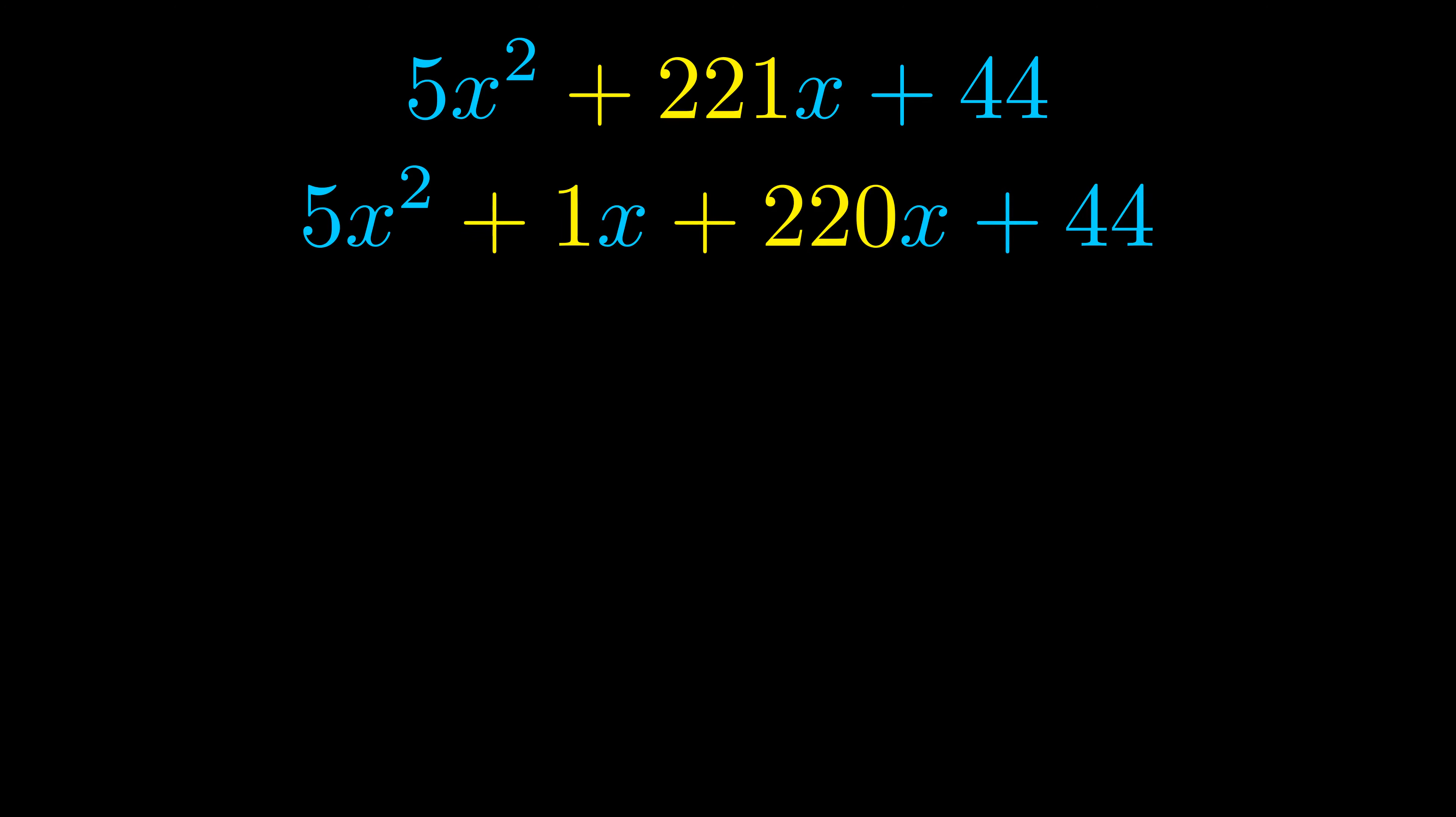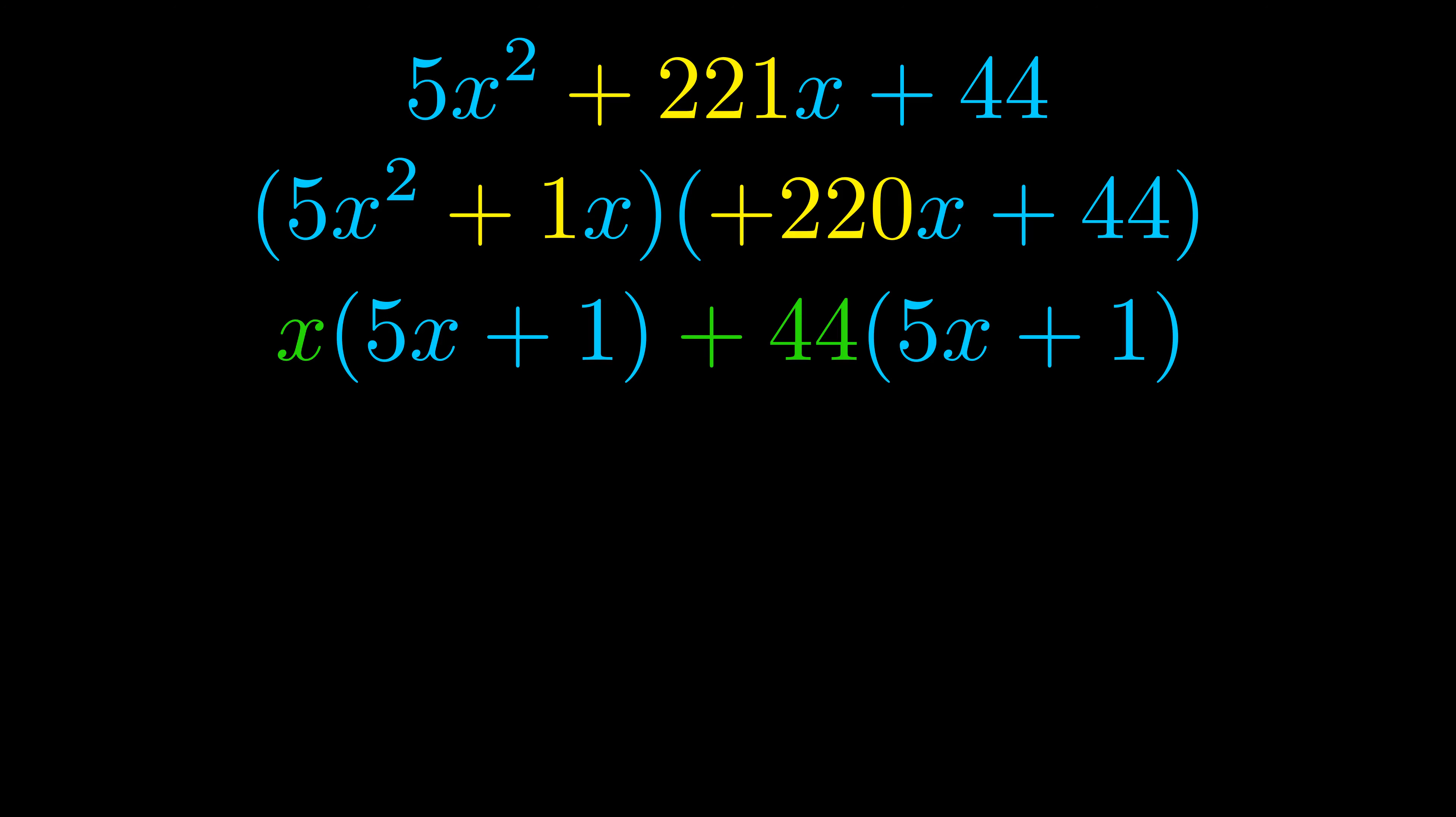Once we've done this we go ahead and put parentheses around the first term and the last term. And we do that so that we can take the greatest common factor out of both terms. We can see the greatest common factor is now outside in green.